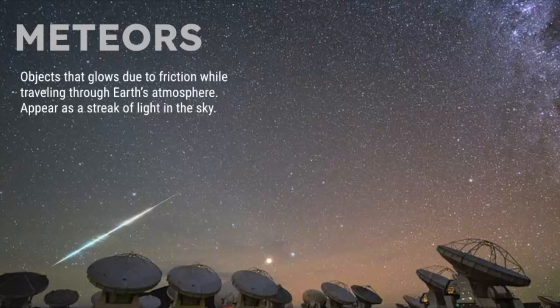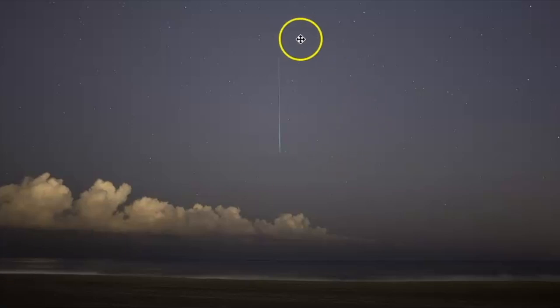Meteors, the definition of it, is that they are objects that glow due to the friction while traveling through Earth's atmosphere. They appear as a streak of light in the sky and they can often vary in color. The reason for that is because of the difference in composition of the dust particles.